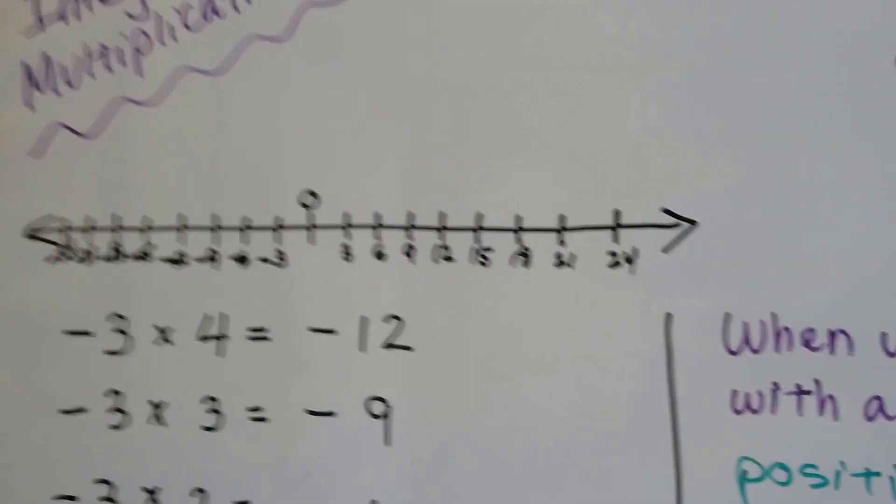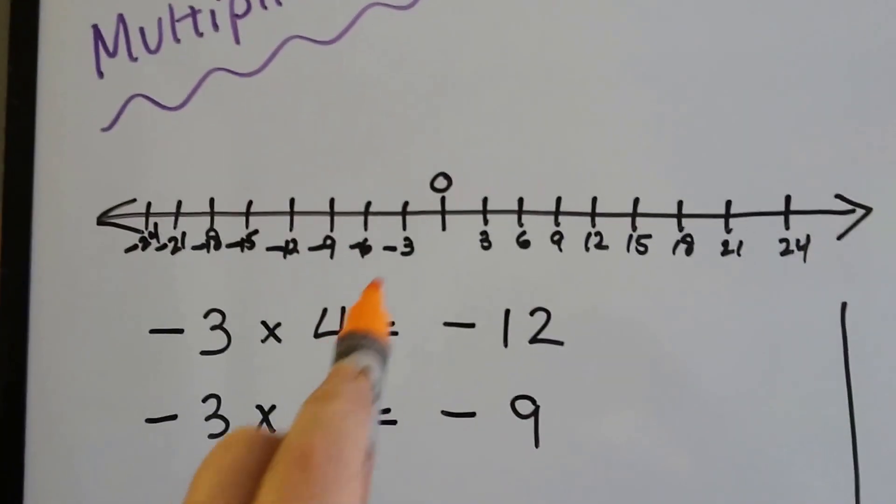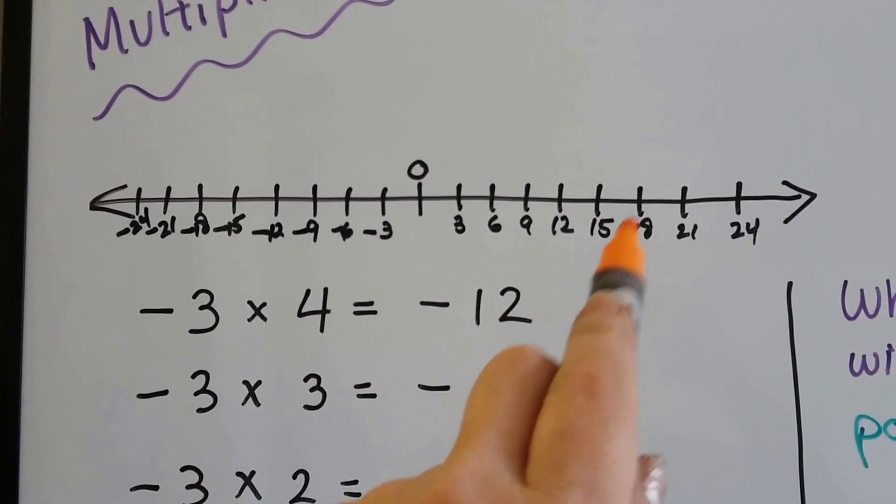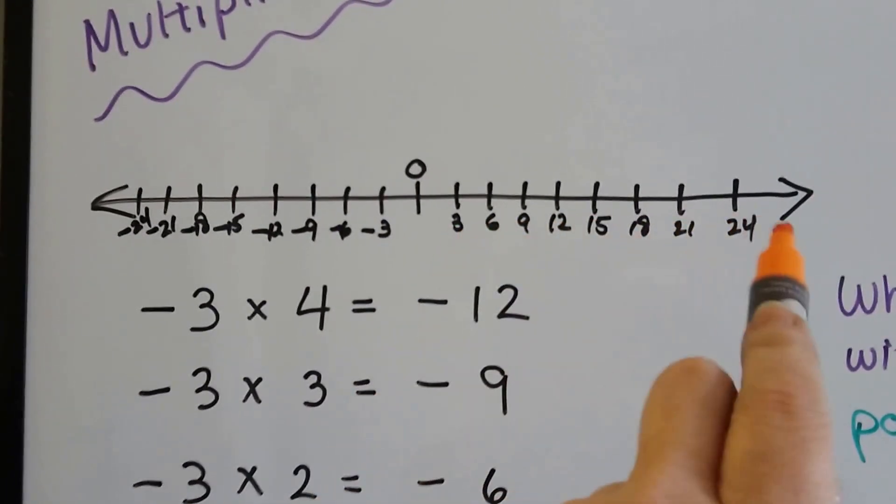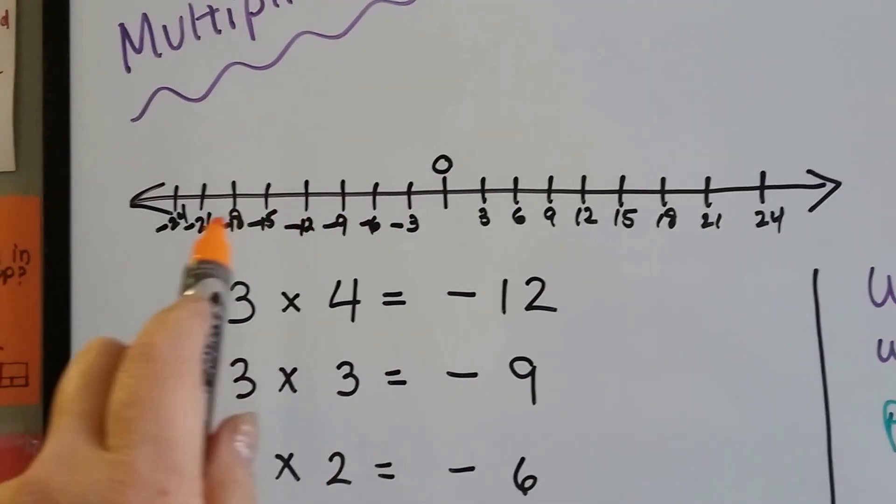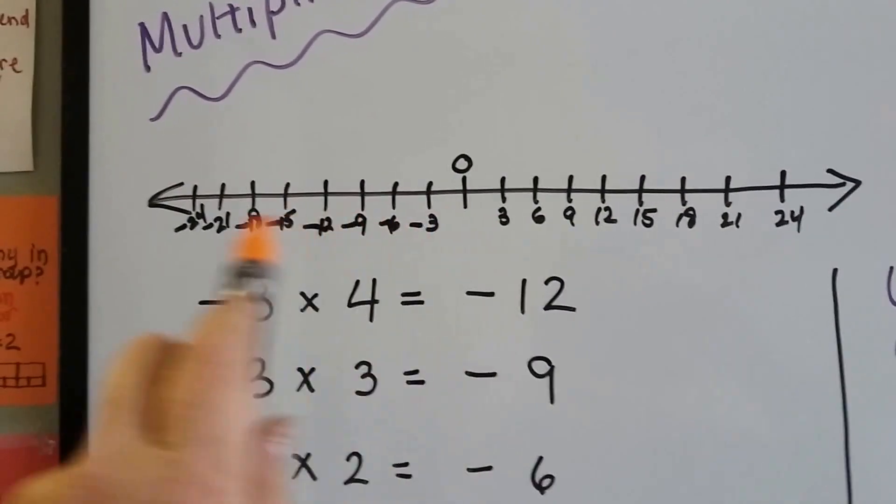Alright, let's take a look at this number line. It moves by 3's. Here's the 0, and we do 3, 6, 9, 12, 15, 18, 21, 24. It's the 3 times table, right? Well, it goes negative 3, negative 6, negative 9, negative 12, going this direction, right, in the negatives.